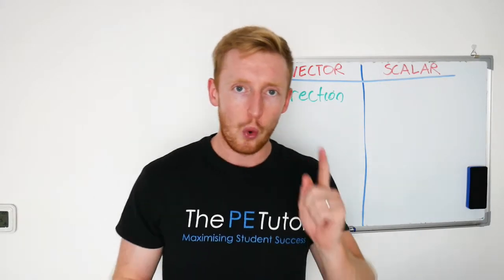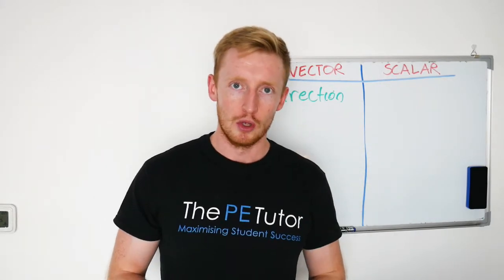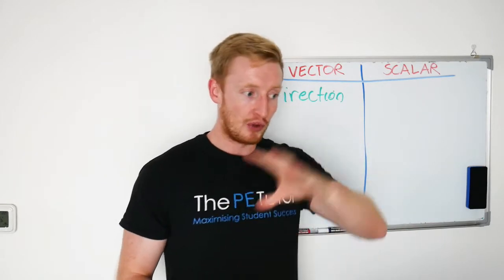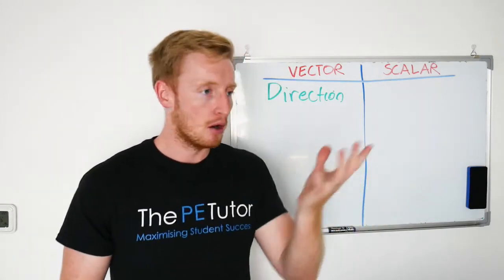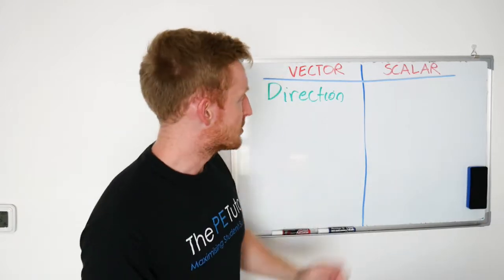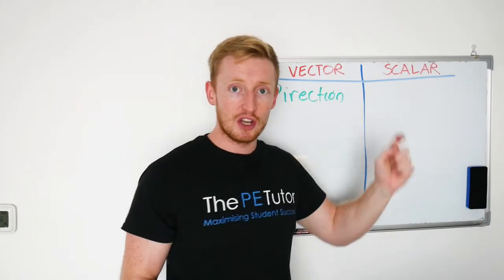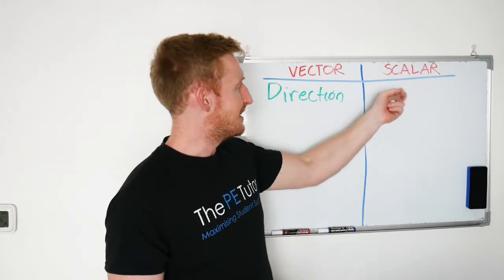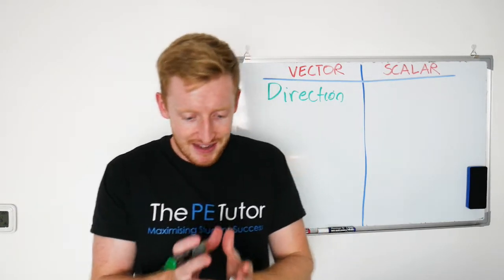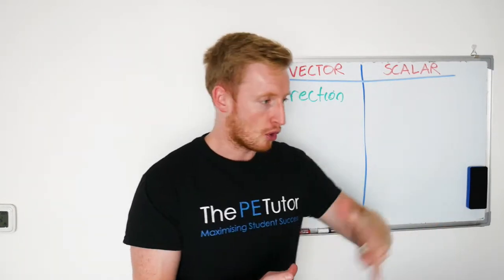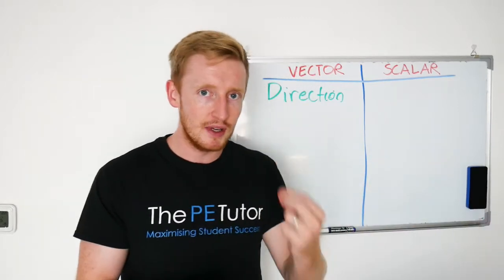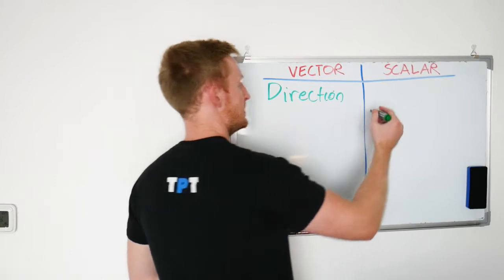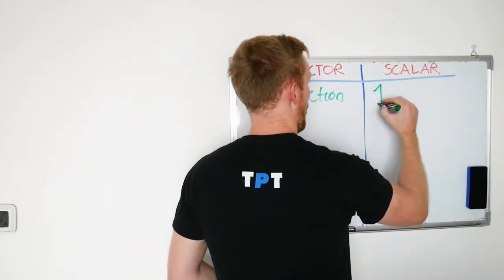Whereas scalar is one-dimensional. We are only measuring one form of magnitude of whatever it is that we are analysing or tracking. For example, time — we just have a number of seconds. Distance — we just have a number of centimetres, metres, kilometres, or miles. We can describe scalar quantities with one dimension.